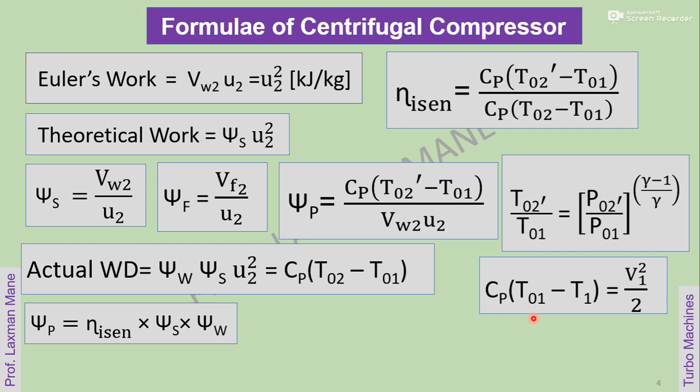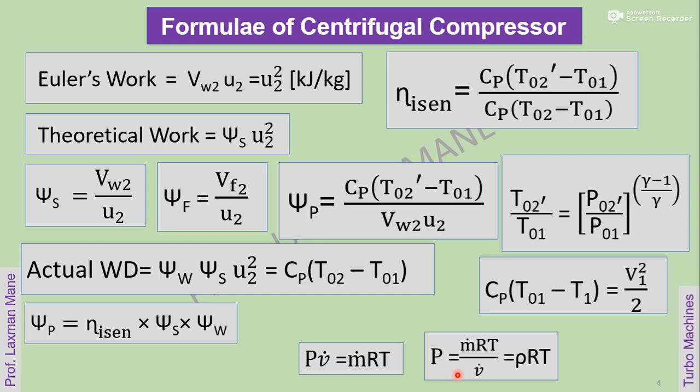Cp into (T01 minus T1) is equal to the kinetic energy at inlet, which is V1 square divided by 2. The general gas equation for air in the form of volume flow rate and mass flow rate is given as P into volume flow rate equals mass flow rate into RT. Further, pressure can be written as m_dot into RT divided by V_dot (volume flow rate), which is also equal to rho into RT, where rho is the density of air.